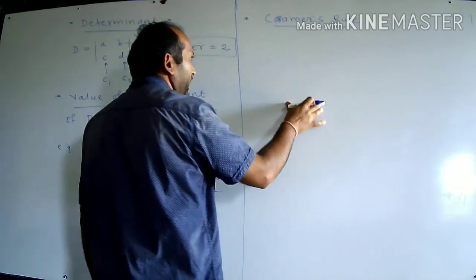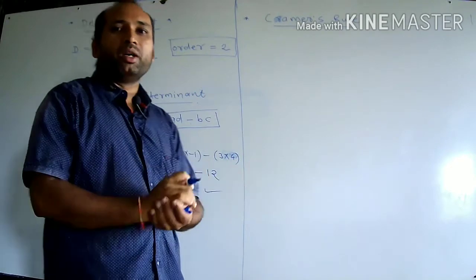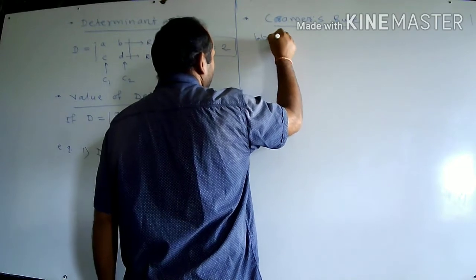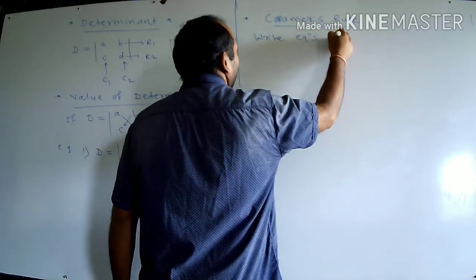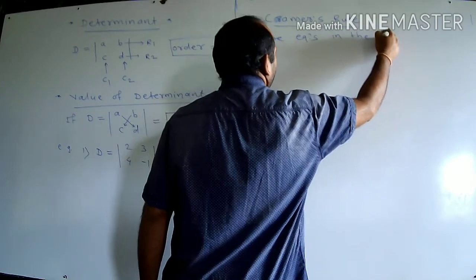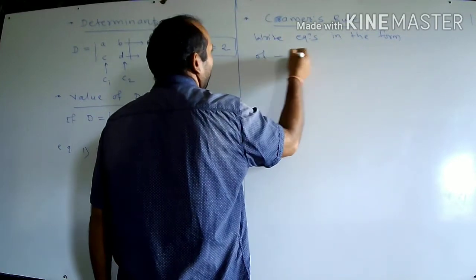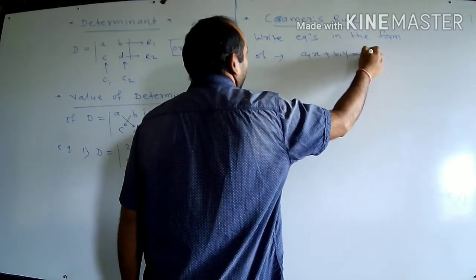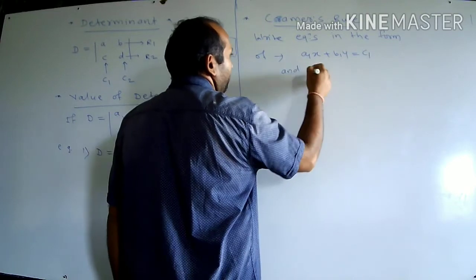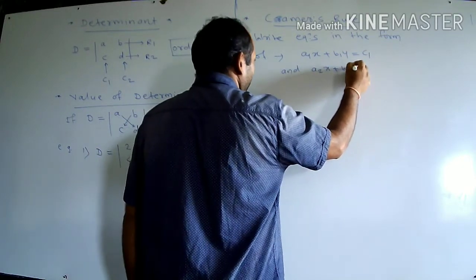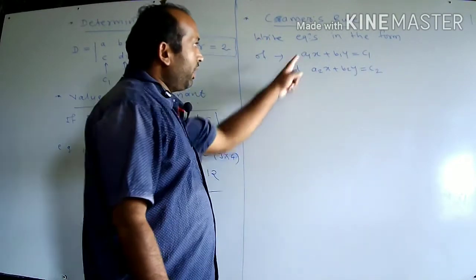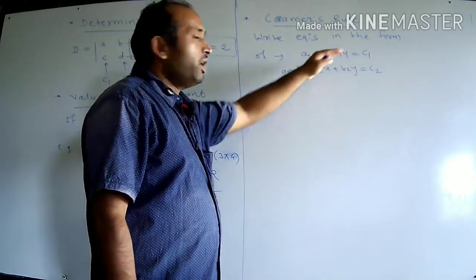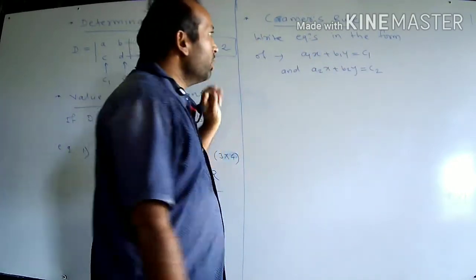In Cramer's Rule, write the given simultaneous equations in a specific format. The first equation is A1·X plus B1·Y equals C1, and the second equation is A2·X plus B2·Y equals C2. Here A1, A2 are coefficients of X; B1, B2 are coefficients of Y; and C1, C2 are the constant numbers.